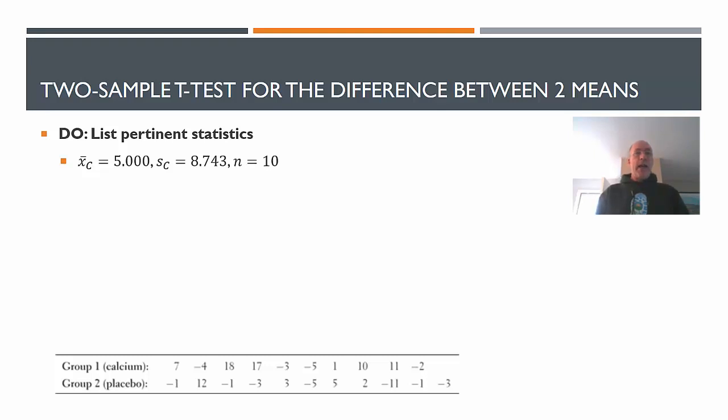The mean for the calcium group was 5.000, we have the standard deviation there, and the sample size is 10. Same for the placebo group. And we already see that calcium group did have a higher positive value. It means they had more of a reduction in blood pressure than the placebo group, which actually had an increase in blood pressure throughout this experiment. Slight one. So we do want to list the statistics here.